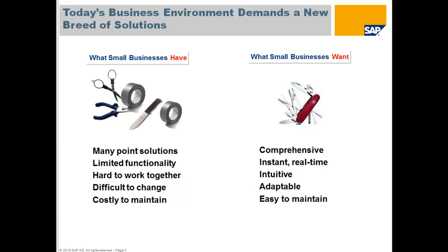The answer is to provide businesses with a new kind of solution. The traditional solutions have been many different point solutions with limited functionality that are hard to integrate, difficult to change, and costly to maintain. SAP has more than 30,000 small businesses using SAP Business One, and we get a lot of feedback that goes into our product development. What the market tells us is that people want solutions that are comprehensive, giving them instant real-time access to information, and are intuitive, adaptable, and easy to maintain.